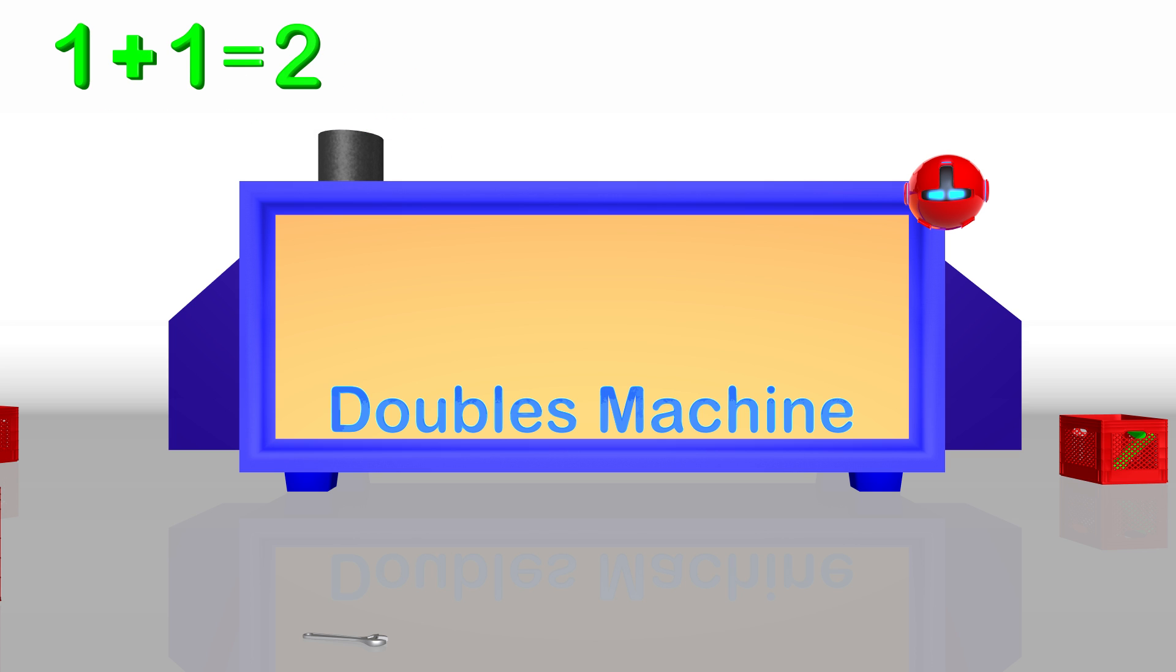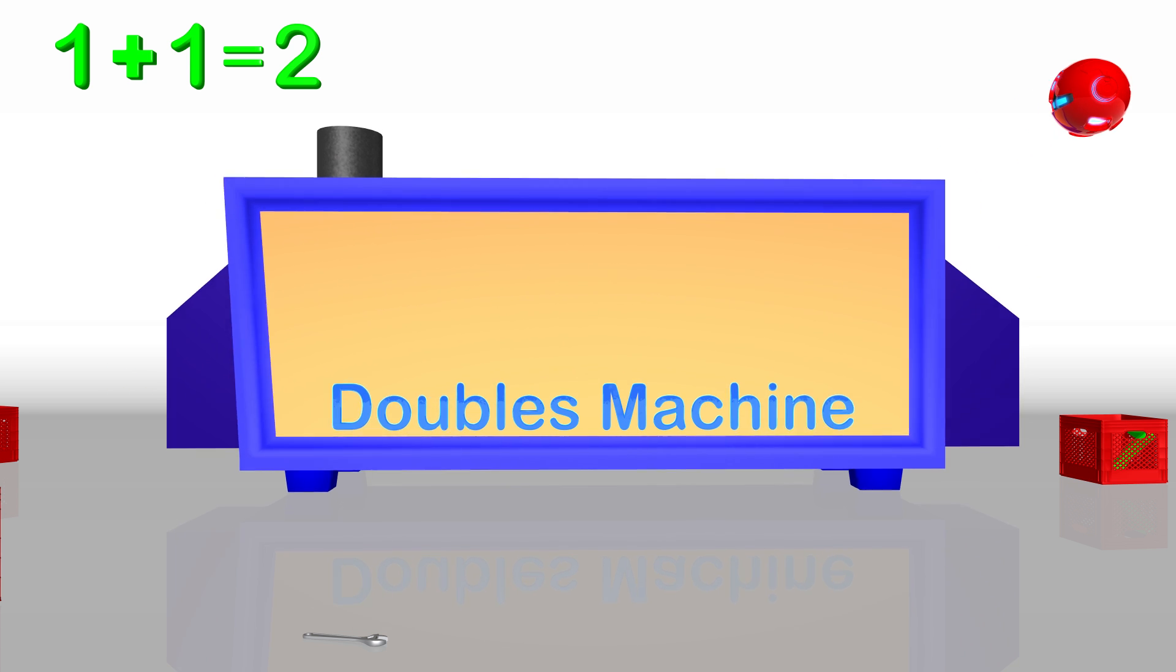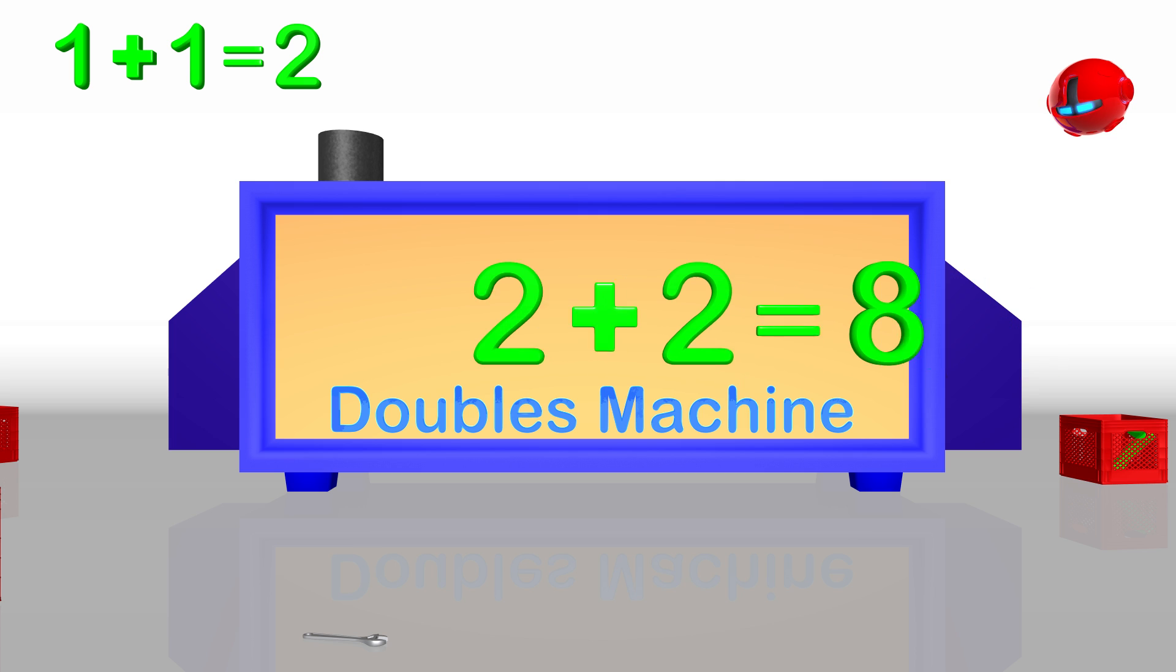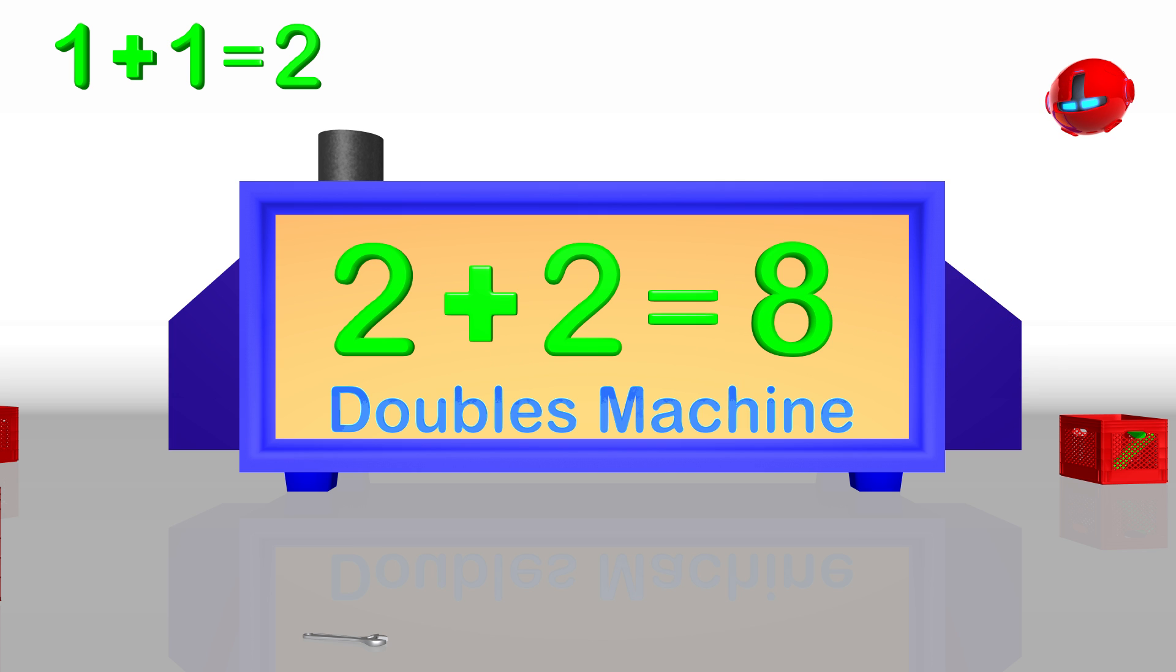This doubles machine is supposed to double the numbers we put in, but it seems to be having problems today. I am putting in the number 2, but watch what happens. Do you think that 2 plus 2 is really 8? I do not think so. 2 plus 2 is 4 and not 8.